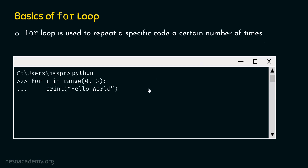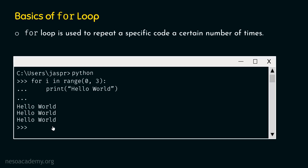It is clear that for loop is used to repeat a specific code a certain number of times. Whenever we want to repeat a statement or a set of statements some number of times, we can do that using for loop. If we are interested in repeating a statement n number of times, then in place of three, we must add n, and the loop will run n times. Let's hit enter and hit enter again to see the output. We will get hello world three times.